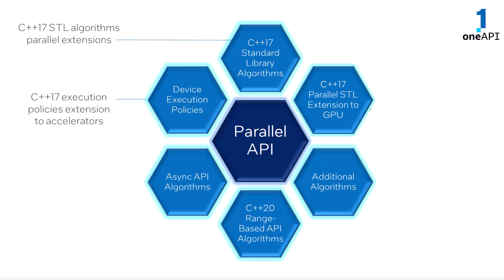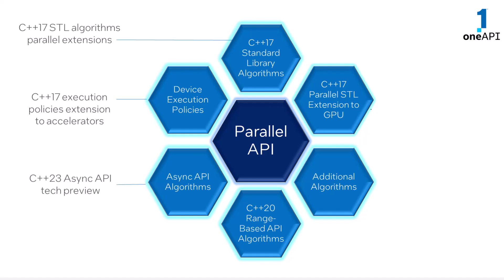The Parallel API component enables parallel and vectorized implementation of C++ 17 standard library algorithms. It also offers C++ with SYCL-based device execution policies that specify where and how a parallel algorithm runs in a heterogeneous environment. It provides asynchronous algorithms as an extension of C++ 17 blocking parallel algorithms, and range-based algorithms introduced by C++ 20. Both the async and the range-based API implementations are limited to device execution policies.